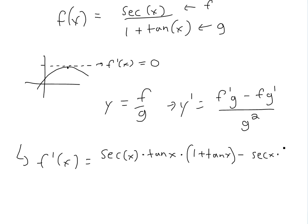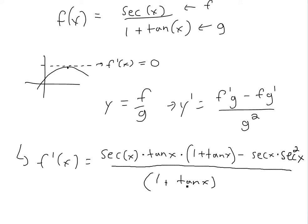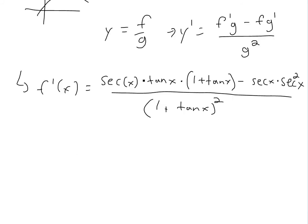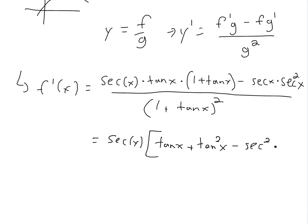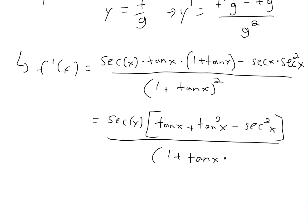Now we subtract f, which is secant of x, times the derivative of 1 plus tan of x. The derivative of 1 is 0, and the derivative of tan of x, as I showed in my earlier video, is secant squared x. So we subtract secant x times secant squared x. This entire expression is divided by 1 plus tan x, all squared.